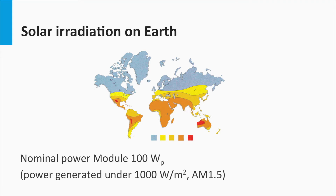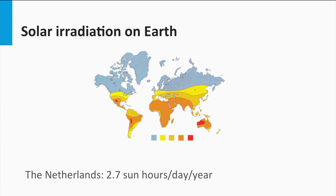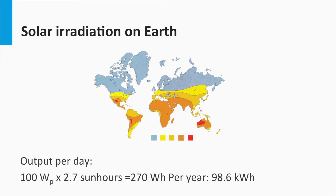To calculate the average energy yield of a solar module, take a module of 100 watt peak. In the Netherlands, the annual average solar irradiance is 2.7 sun hours per day, so the module delivers 100 watt peak × 2.7 sun hours = 270 watt hours per day, which equals 98.6 kilowatt hours per year. In sunnier places like Spain, common irradiance can be around 4.2 sun hours per day, meaning the same 100 watt peak module delivers on average 420 watt hours per day.